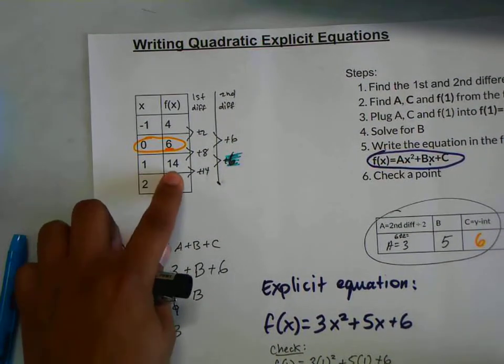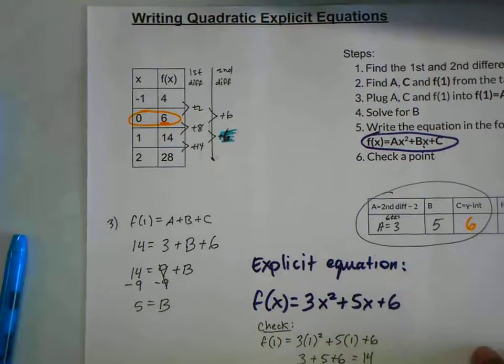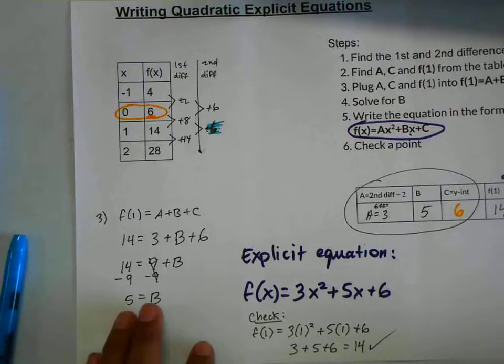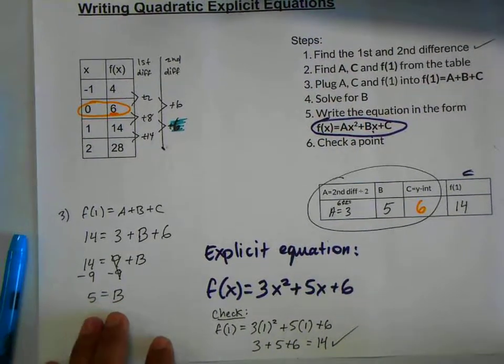As you can see, f(1) is equal to 14. That means your equation is cha-ching. Good. All right. So I'm going to give you some more practice problems. Good luck.